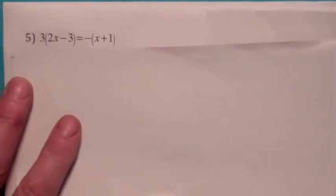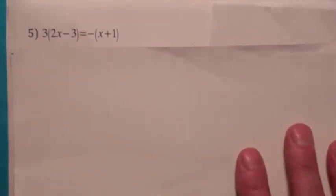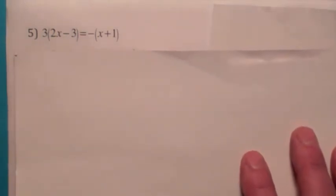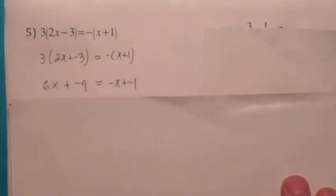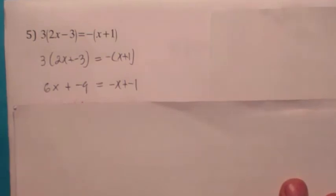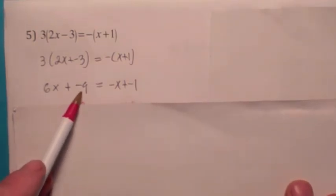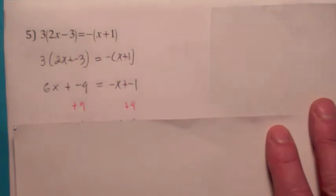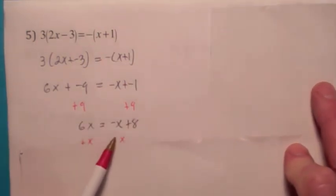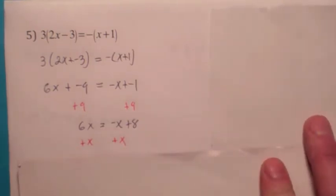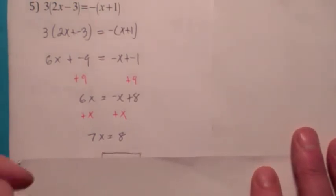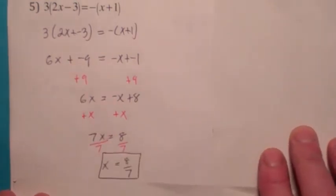For this one, remember we have x's on both sides, so we want to get the x's on one side and the numbers on the other. Before we can do that, let's change to additive form and use the distributive law. Then we add positive 9 to both sides to move the numbers — remember, the equation is a balance, you always have to do the same thing to both sides. Then add positive x to both sides to get the x's together. At the very end, multiply by the reciprocal of the coefficient 7, which is 1/7, or divide by 7. The answer is x equals 8/7.